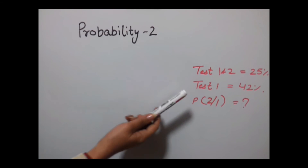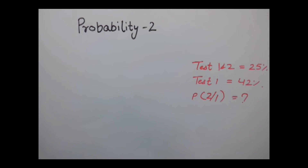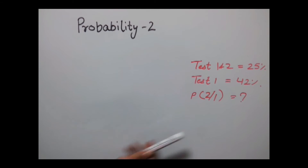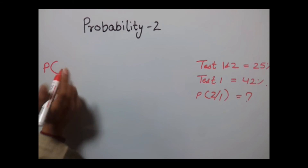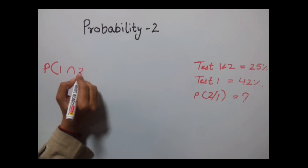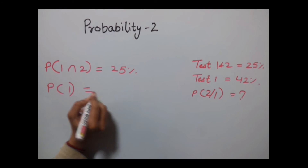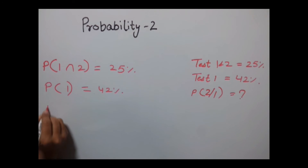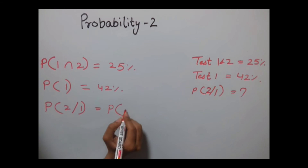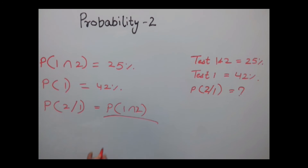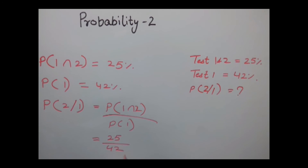According to the question, students who passed both tests are 25%, and students who passed test 1 are 42%. We need to find out the probability of passing test 2 given test 1, which is P(2|1). Putting this in the formula: P(1∩2) divided by P(1) gives us 25 by 42. This is the answer.